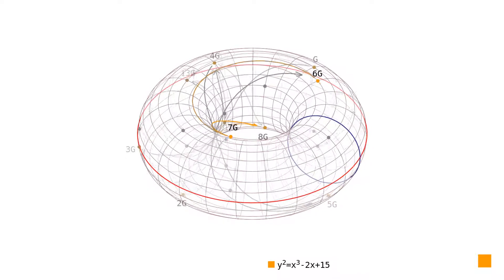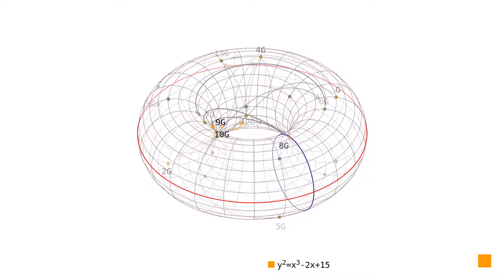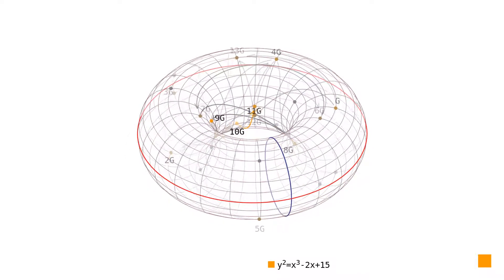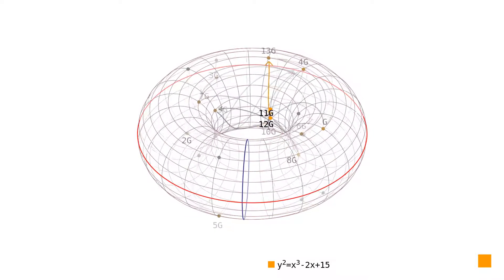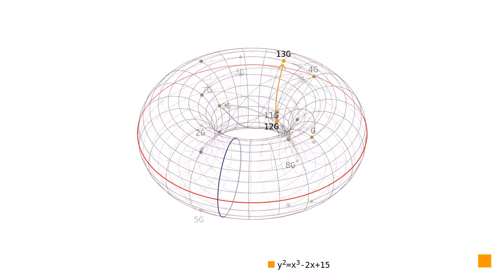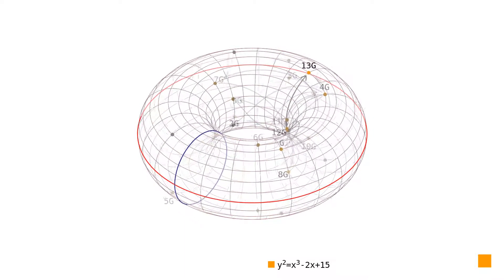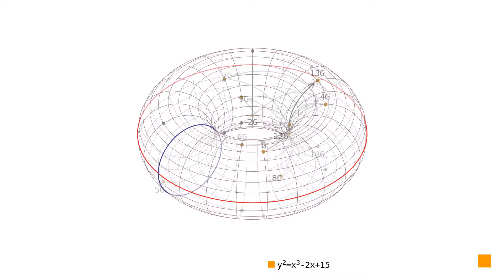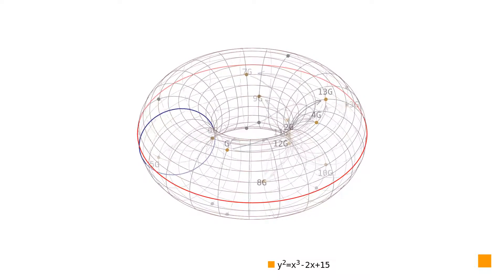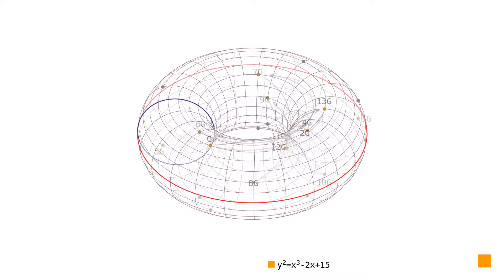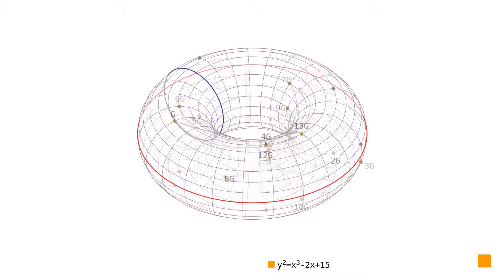On average, this algorithm must traverse about half of the rational points of the elliptic curve before finding the chosen point. This is called the elliptic curve discrete logarithm problem, and the security of elliptic curve cryptography is based upon the toughness of solving this problem.